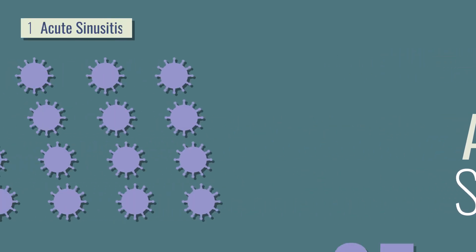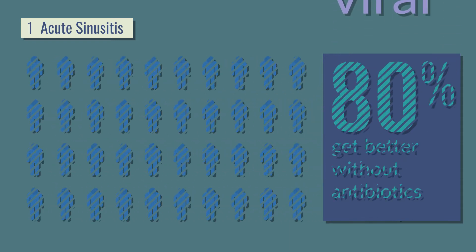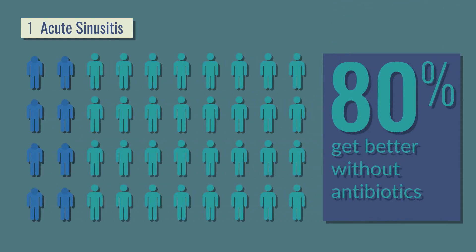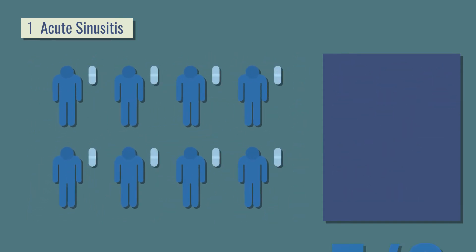First off, 95% of acute sinus infections are viral, and 80% of all sufferers get better in two weeks without taking antibiotics. Even when an antibiotic is prescribed for acute sinusitis, 7 out of 8 people don't get better any faster.